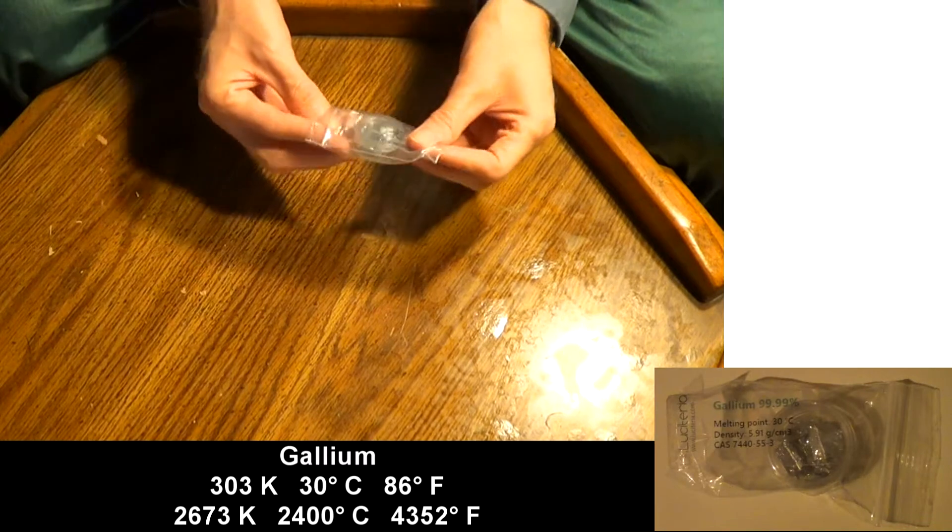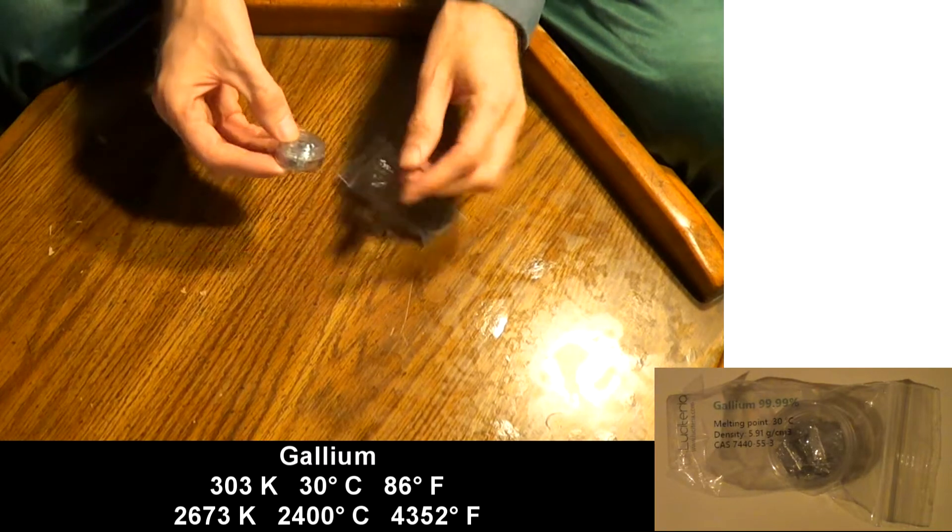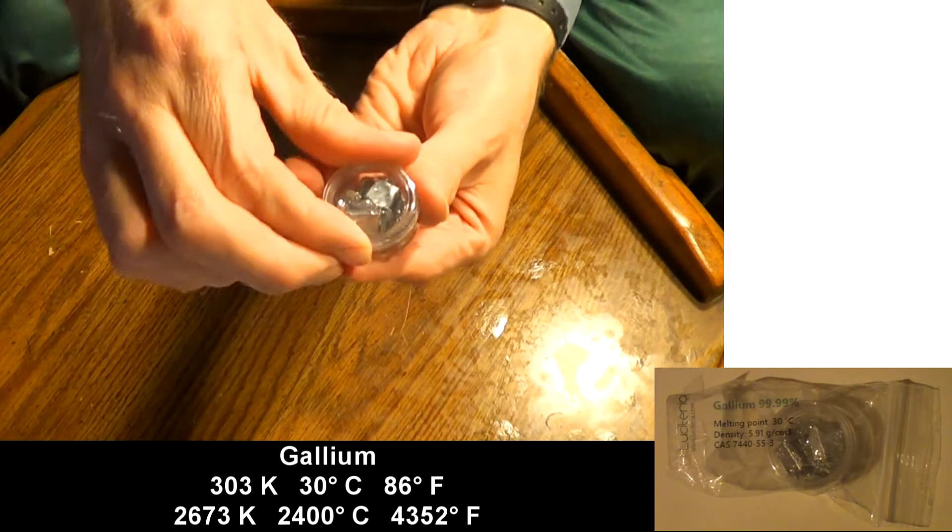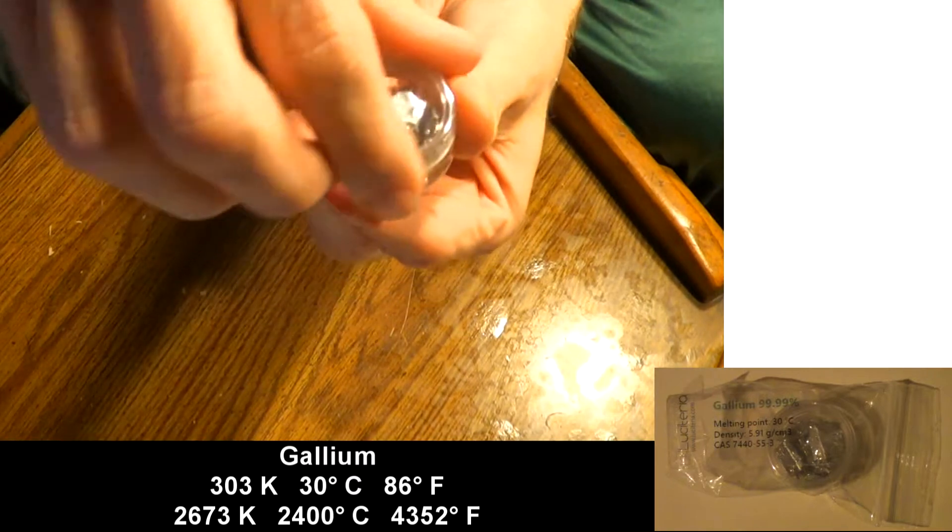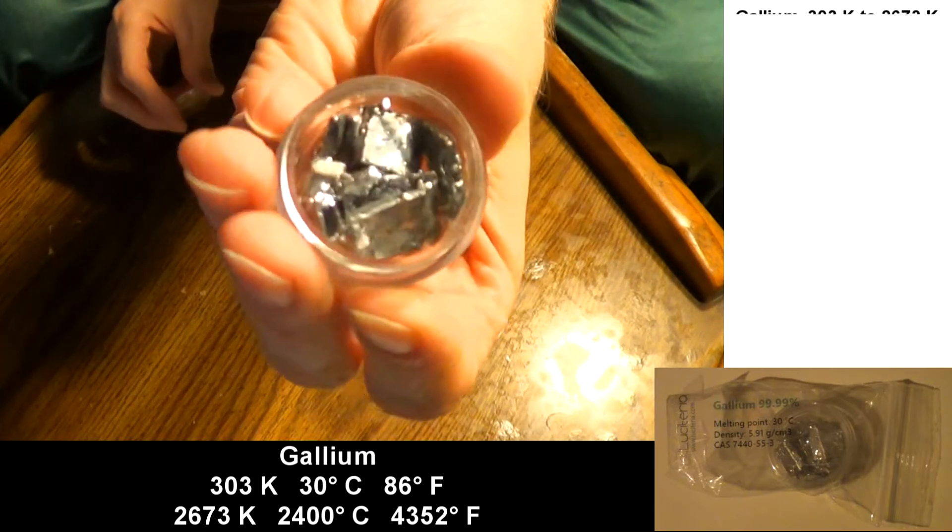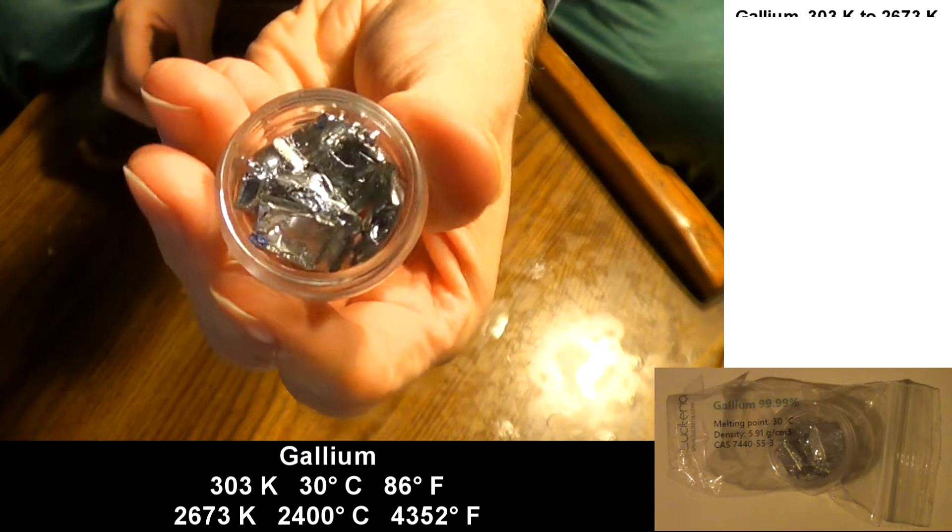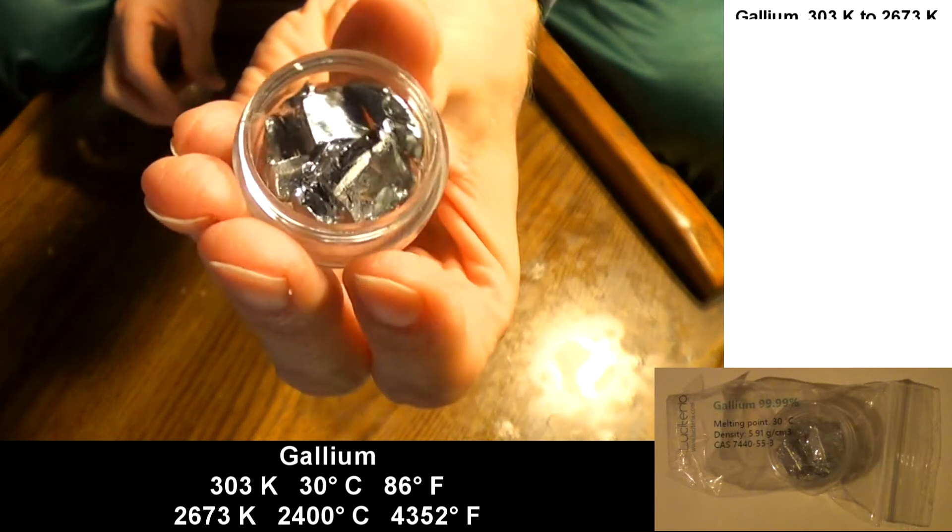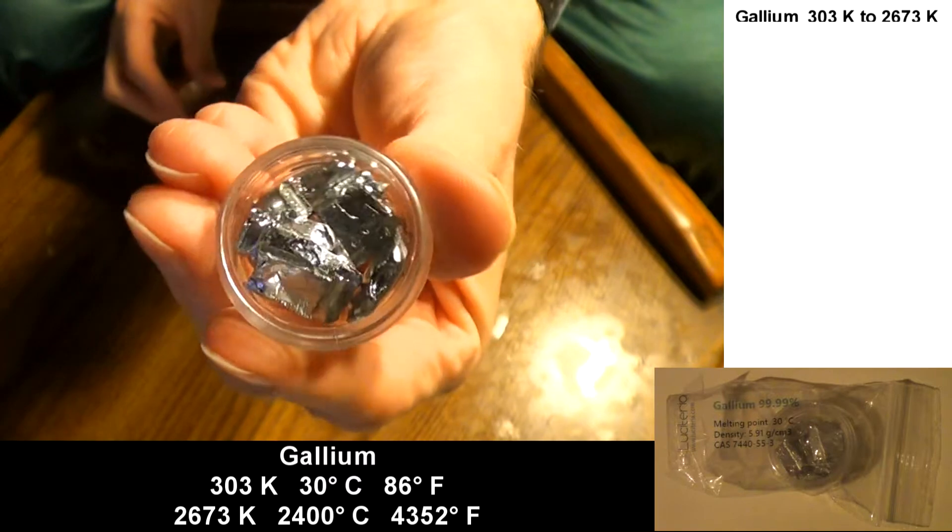Gallium is not toxic, so I can take it out of the bag and show you what it looks like. It has an extremely wide range of temperatures in this liquid state. It melts in your hand, but it won't boil until it gets really hot. It's a liquid from 303 Kelvin all the way up to 2673 Kelvin.